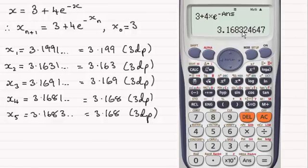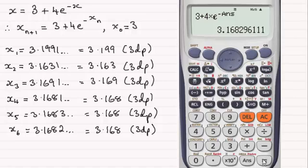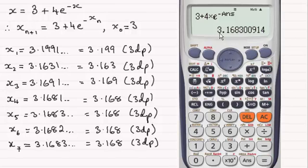a 1, so it's not settled. Pressing equals again gives us 3.1682, still 3.168 to 3dp, but that fourth digit is not settled. Let's do it again - we've now got 3.1683 and it's still going to